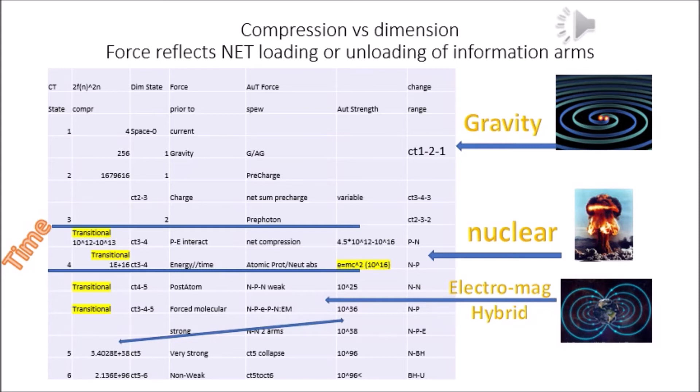Gravity appears instantaneous and universal in range because it occurs in a pre-timed state. We see the net effect of gravity, and we see the net effect of anti-gravity, which is unfolding as dark energy.